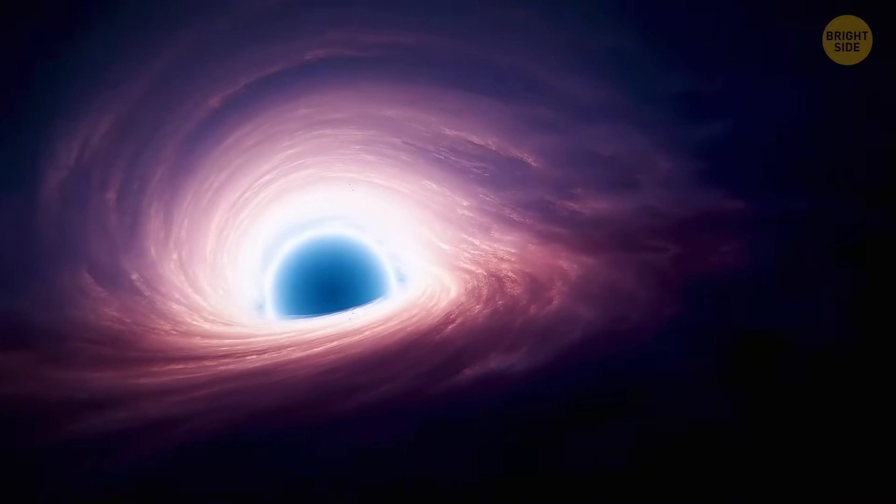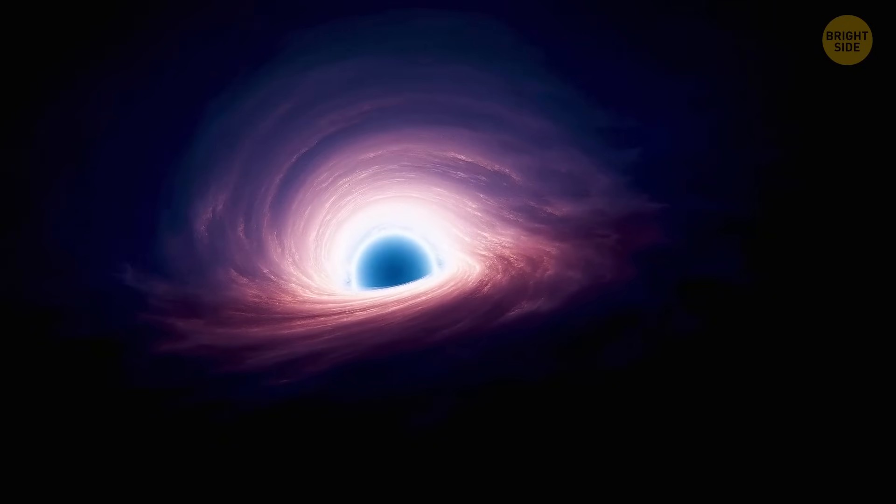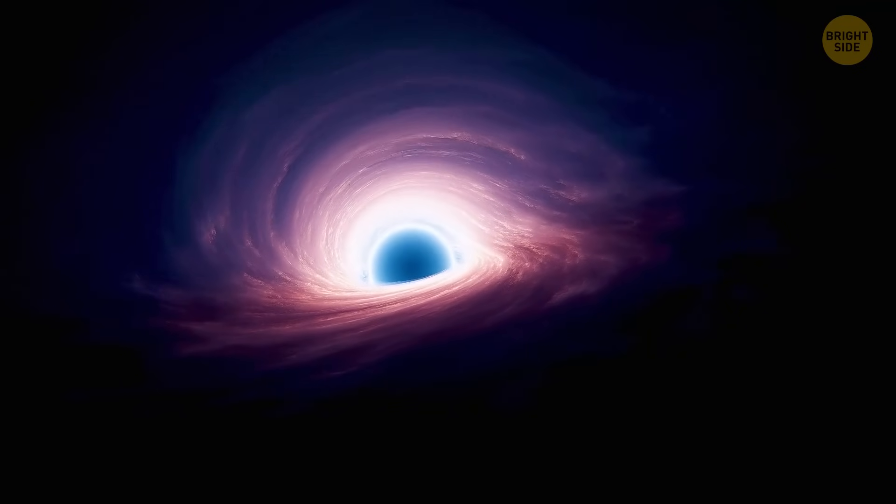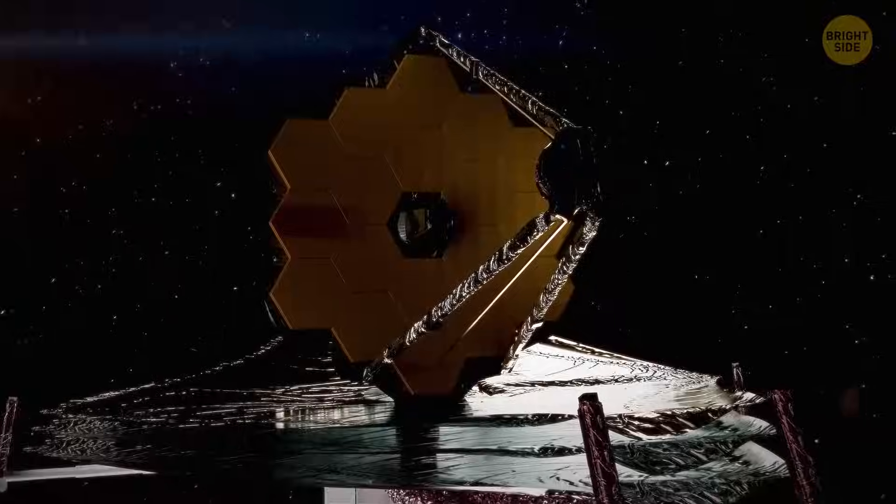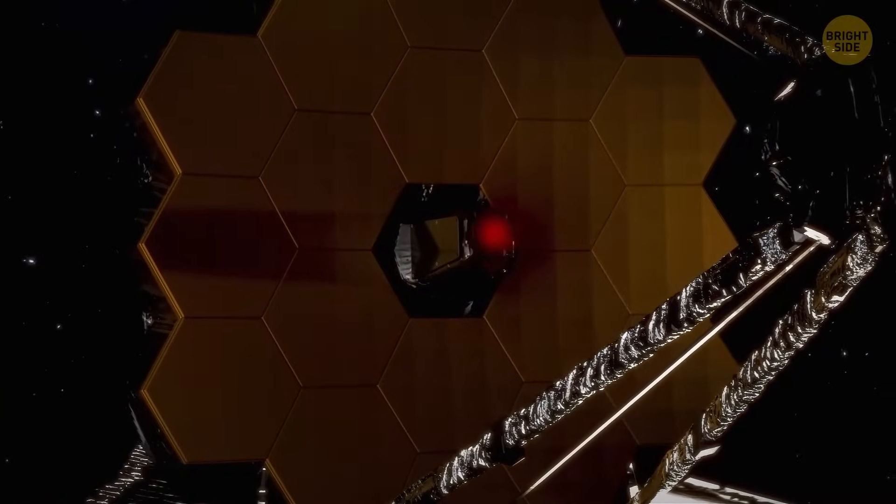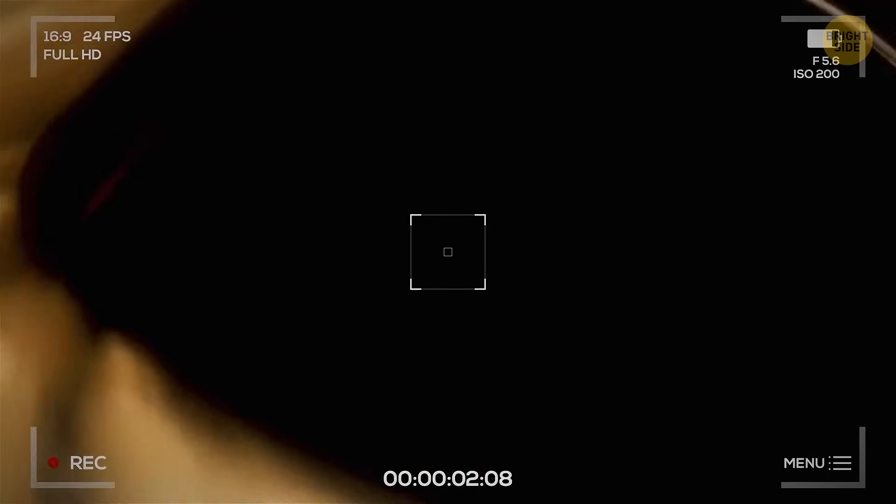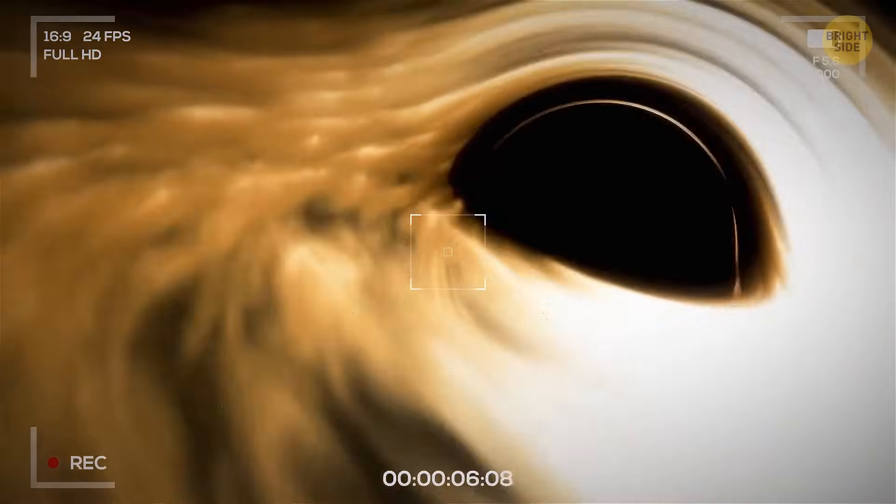Actually, scientists have long suspected that supermassive black holes probably existed in the early universe. But this theory has been proven only thanks to the JWST and its infrared eye. It's shown that the black hole Sears 1019 is actively munching on all the matter it can lay its hands on.